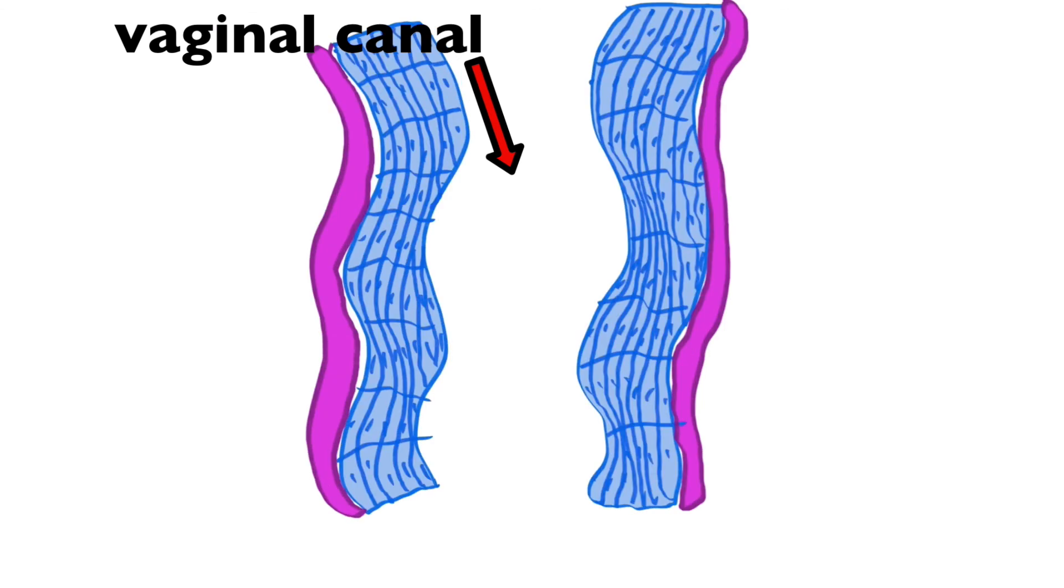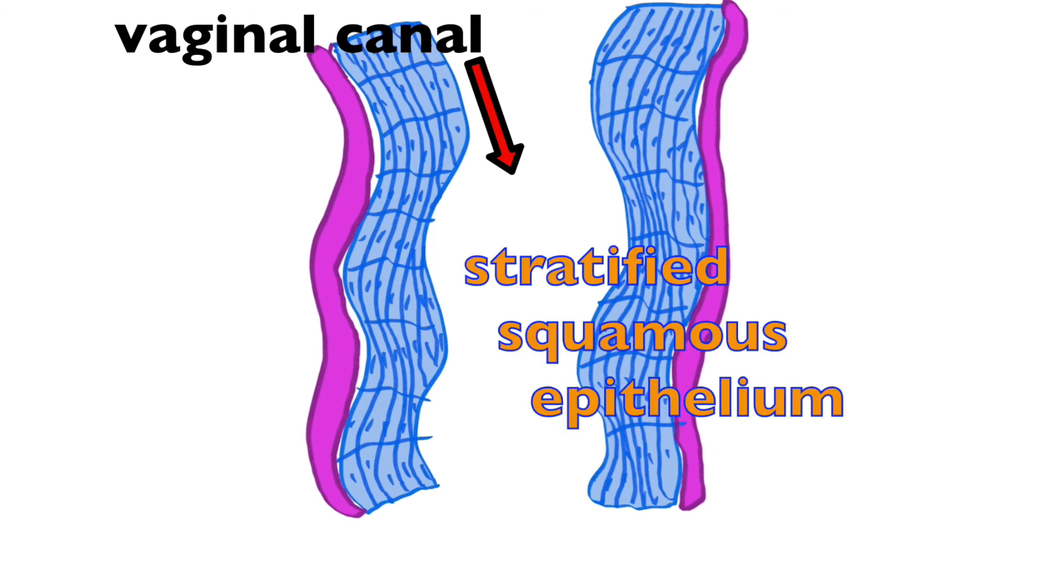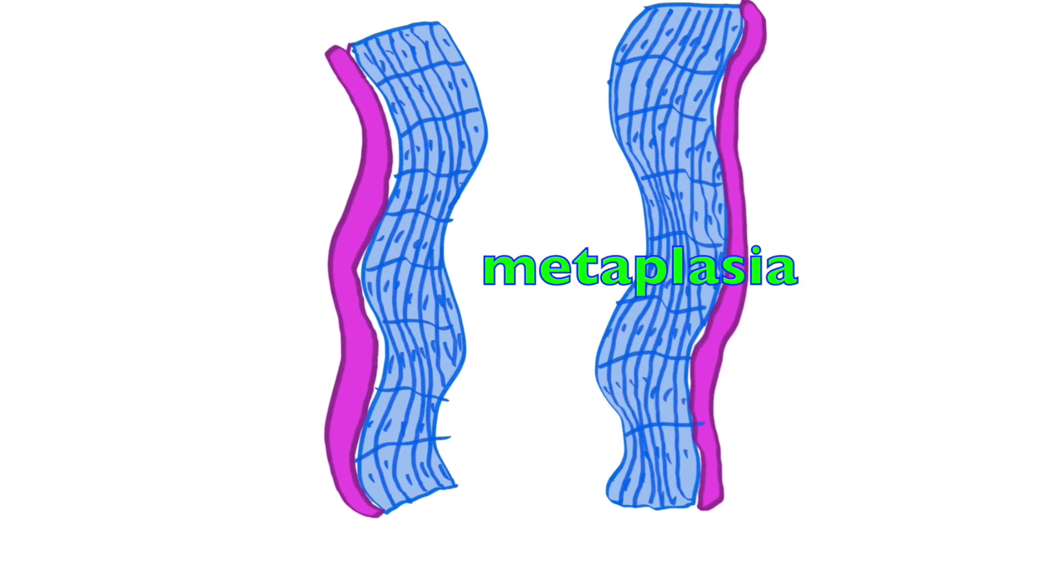But at puberty, the vagina in females transitions to a stratified squamous epithelial tissue. I'm throwing a lot of terms in here with respect to epithelial tissue. We will talk about epithelial tissue in detail, but the development of the vaginal lining from simple cuboidal epithelial tissue to stratified squamous epithelial tissue is what is known as...